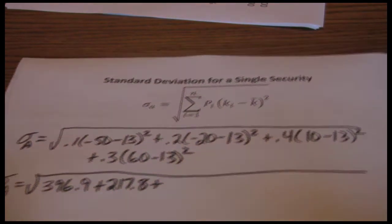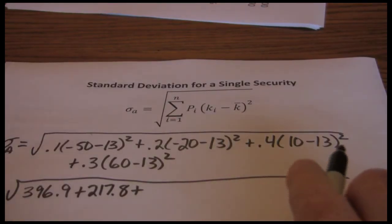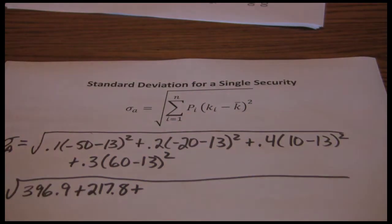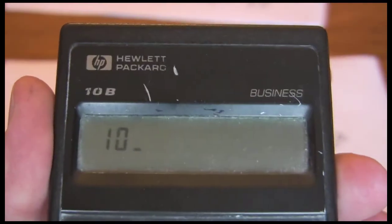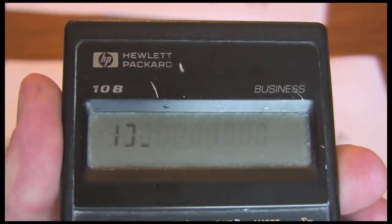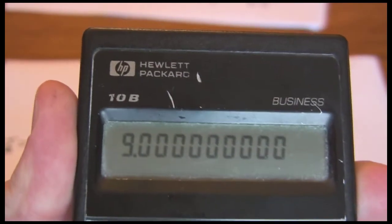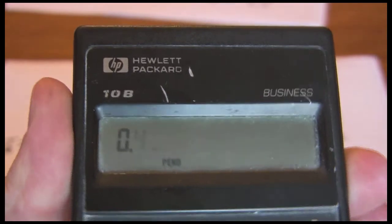Next we have ten minus thirteen squared times .4. Ten minus thirteen squared times .4.